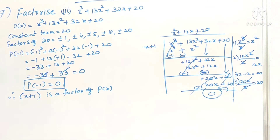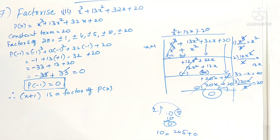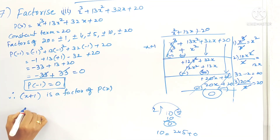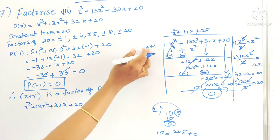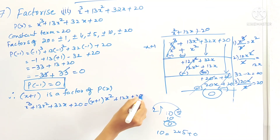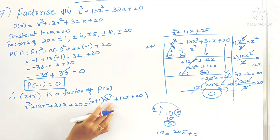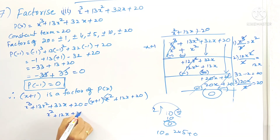By the division algorithm, just as 10 = 2 × 5 + 0, we can write: p(x) = x³ + 13x² + 32x + 20 = (x + 1)(x² + 12x + 20). Now we need to find the factors of the quadratic x² + 12x + 20.